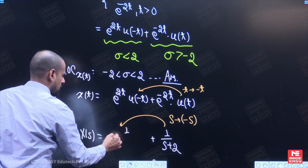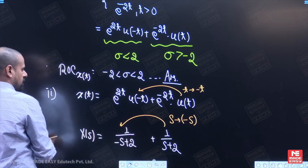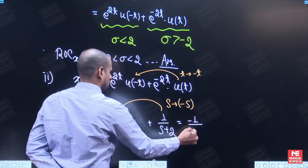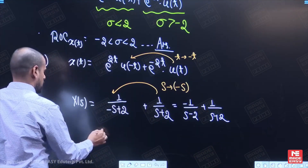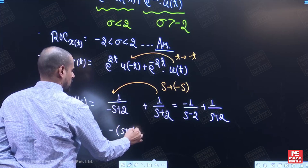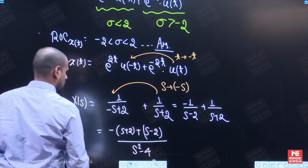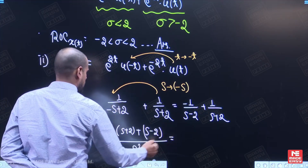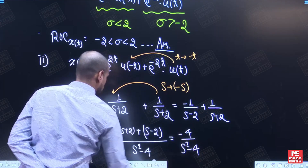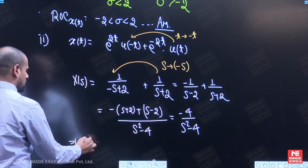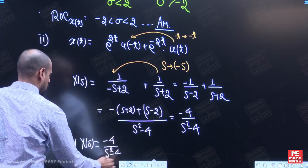So the Laplace of the first term is 1 upon (minus s plus 2), i.e., replacing s with minus s. We can write this as minus 1 upon (s minus 2) plus 1 upon (s plus 2). Simplifying: combining over a common denominator s squared minus 4, we get minus(s plus 2) plus (s minus 2) over (s squared minus 4). The s terms cancel, leaving minus 4 upon s squared minus 4. This is the answer for the second part.